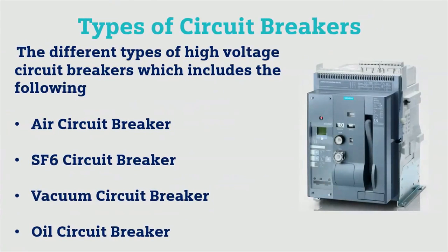These are the types of circuit breakers for high voltage applications: air circuit breaker, SF6 circuit breaker, vacuum circuit breaker, and oil circuit breaker. In this video we will discuss the air circuit breaker, because right now most industries are using air circuit breakers, and oil circuit breakers have been replaced by this latest ACB.